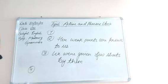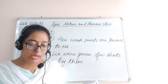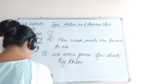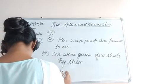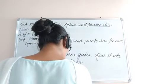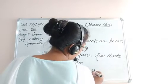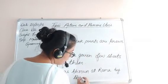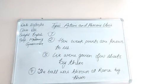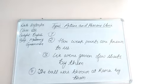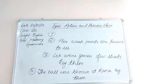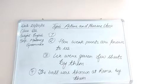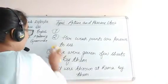The fourth sentence is: 'They threw the ball at Ram.' The passive voice becomes: 'The ball was thrown at Ram by them.' Please take down the screenshot, students.